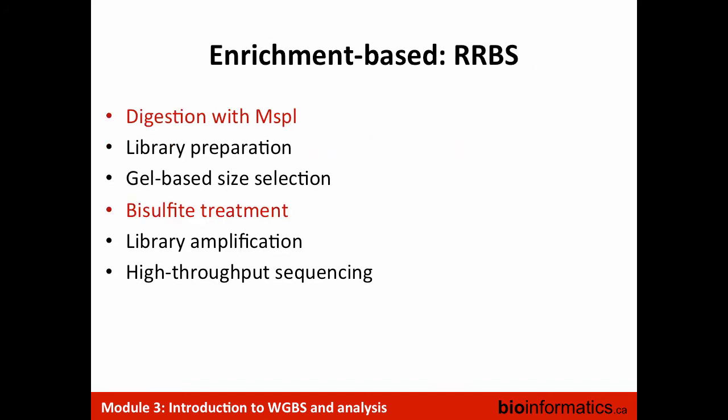Another approach to enrich — because the problem is that without enrichment you have to sequence the whole genome, which ends up being quite expensive — is called RRBS. This is a strategy where you're preparing the DNA by digestion using an enzyme that specifically targets regions that are methylated. There is a bisulfite treatment step, but the way you're enriching for methylated DNA is by using a particular enzyme targeting those methylated regions.